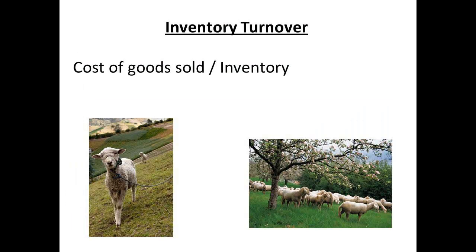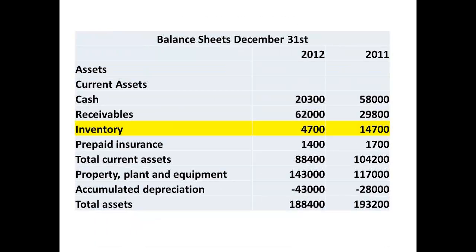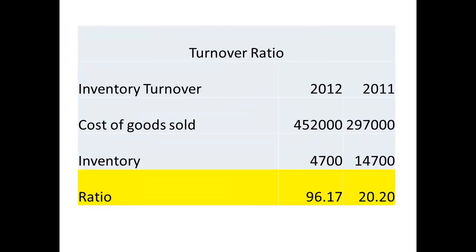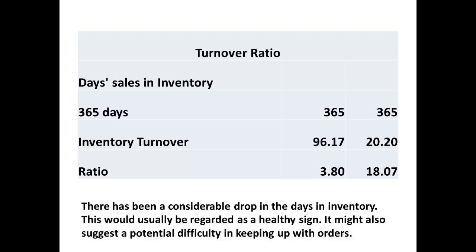The inventory turnover is obtained by dividing the cost of goods sold by the figure for inventory. Figures for the cost of goods sold are obtained from the income statements, and figures for inventory from the balance sheets. As a result of the fall in inventory, there has been a considerable change here — the figure has risen from 20.2 in 2011 to 98.17 in 2012. The day's sales in inventory is determined by dividing 365 days by the inventory turnover ratio. The longer this period, the longer goods remain in inventory before being sold and the greater the amount tied up in this asset.